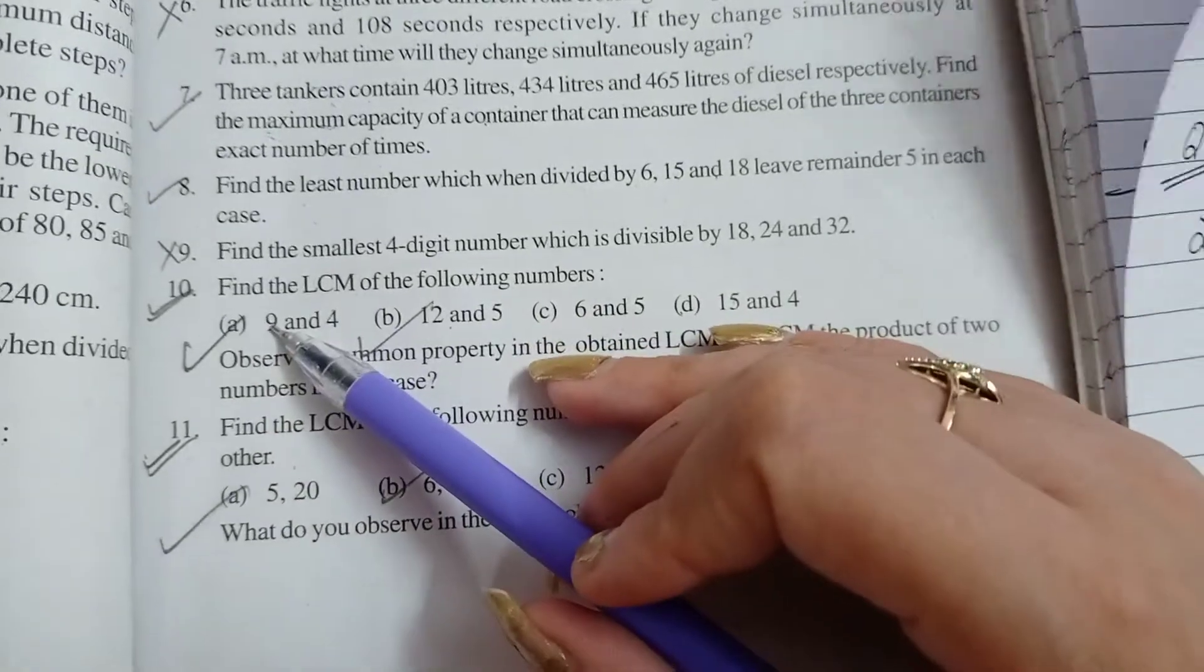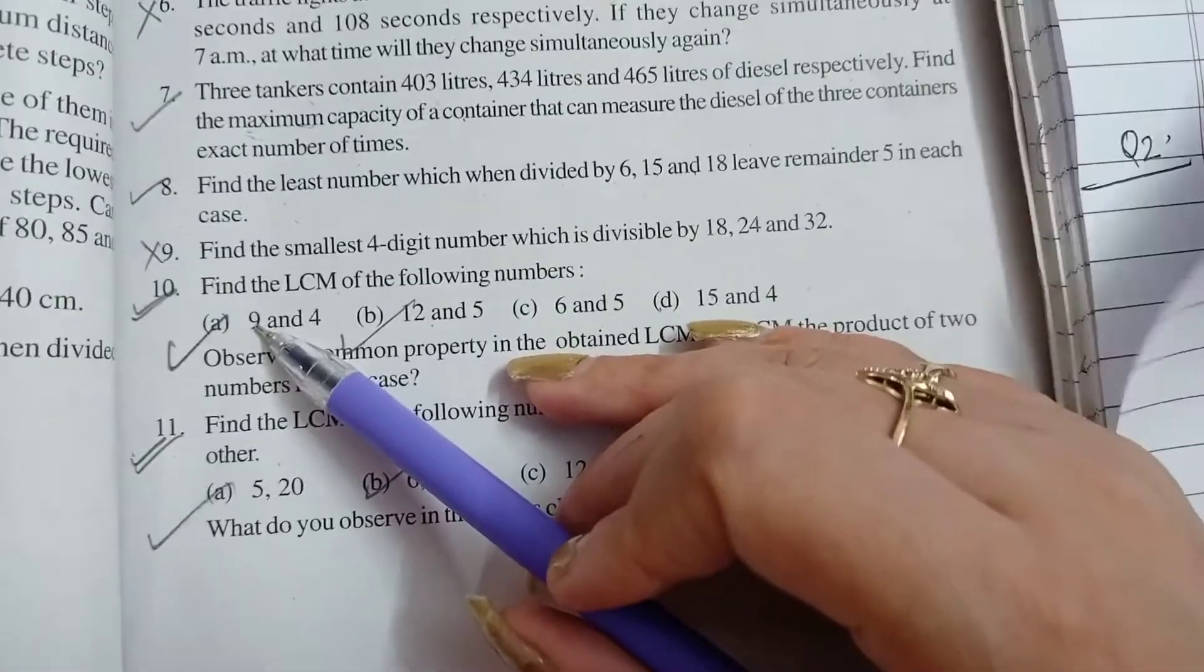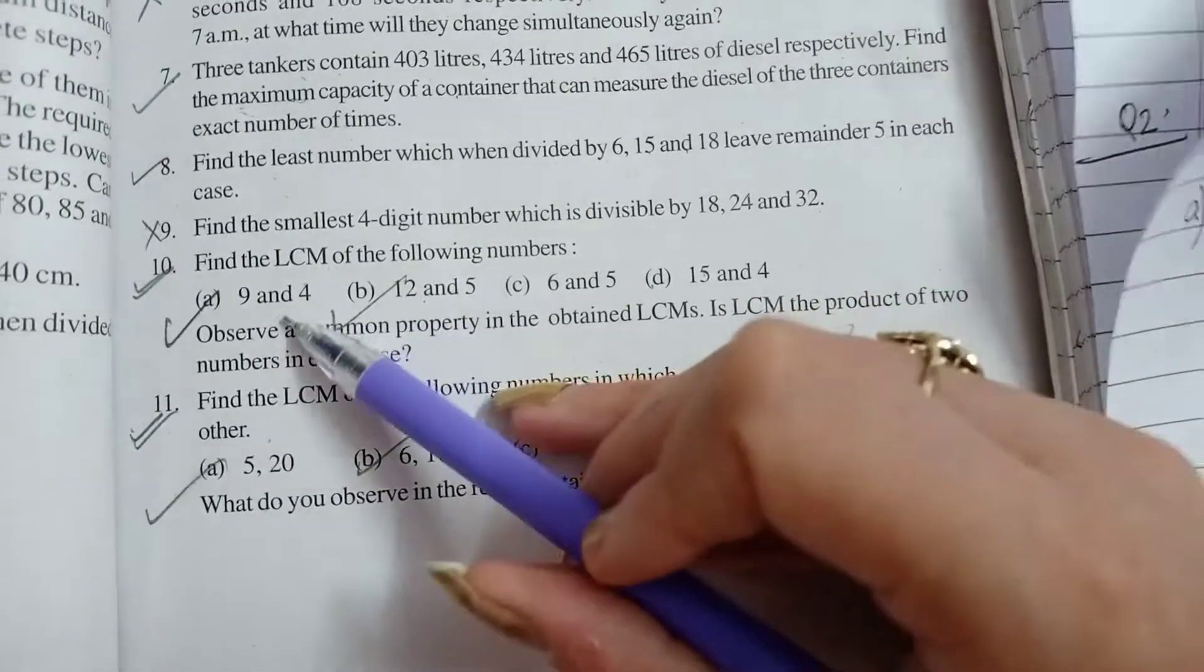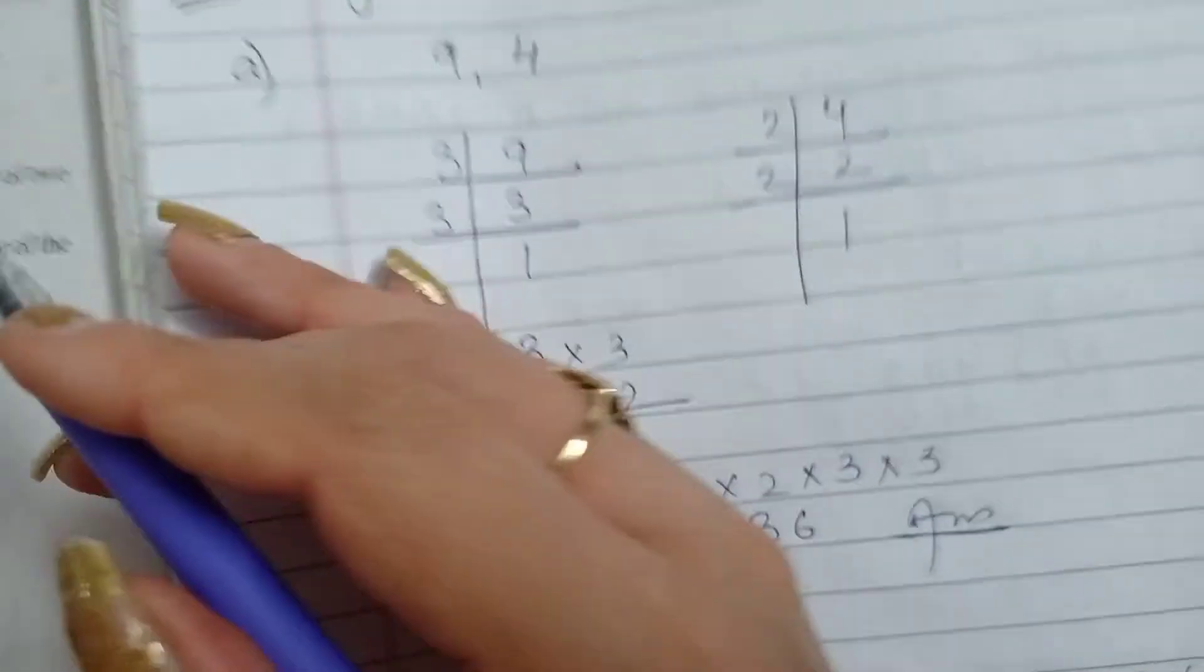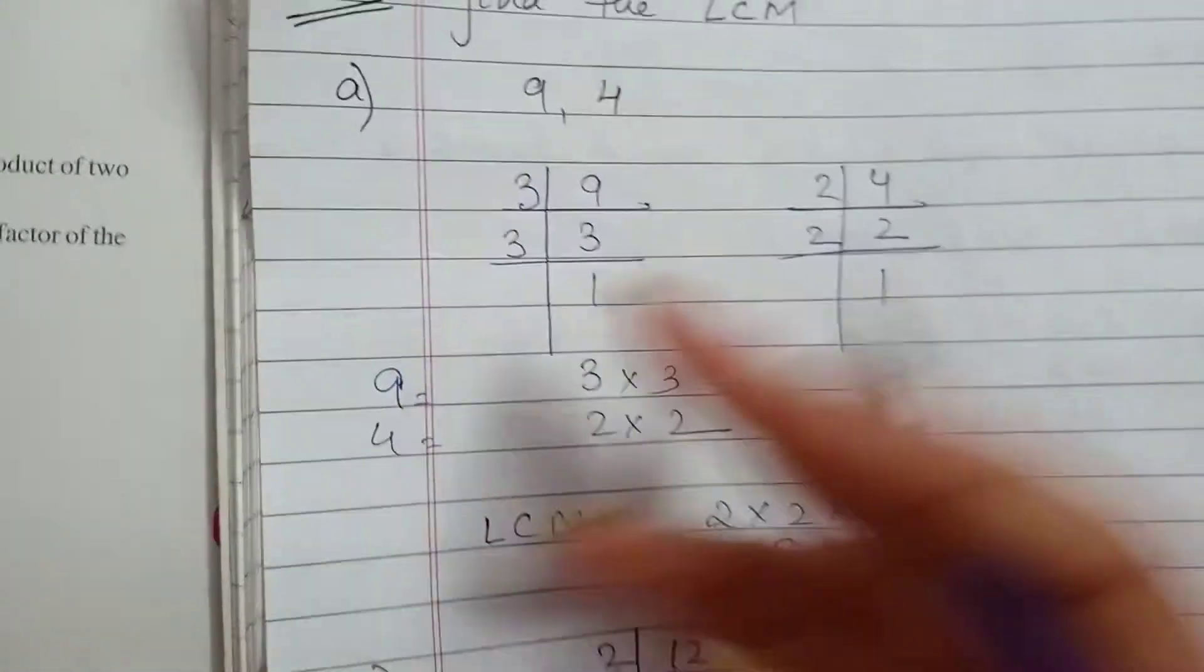Let us continue with question 10 now. Here in this question we need to find the LCMs of the following numbers. I have taken first part with prime factorization method.